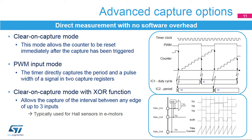The timer includes an XOR function to combine the three input channels with XOR logic. This is typically used to handle the three 120-degree phase-shifted signals coming from hall sensors in electrical motors, allowing a clear-on-capture on each and every edge of the three signals and providing a capture value directly usable for speed regulation.